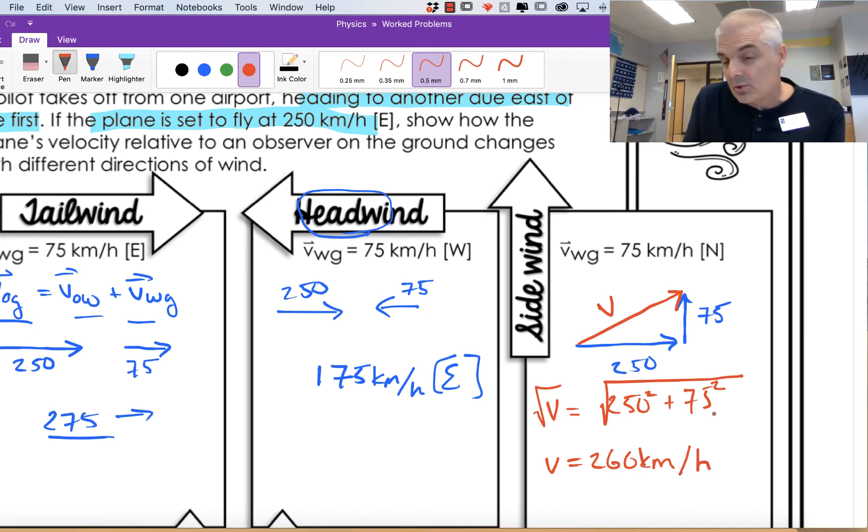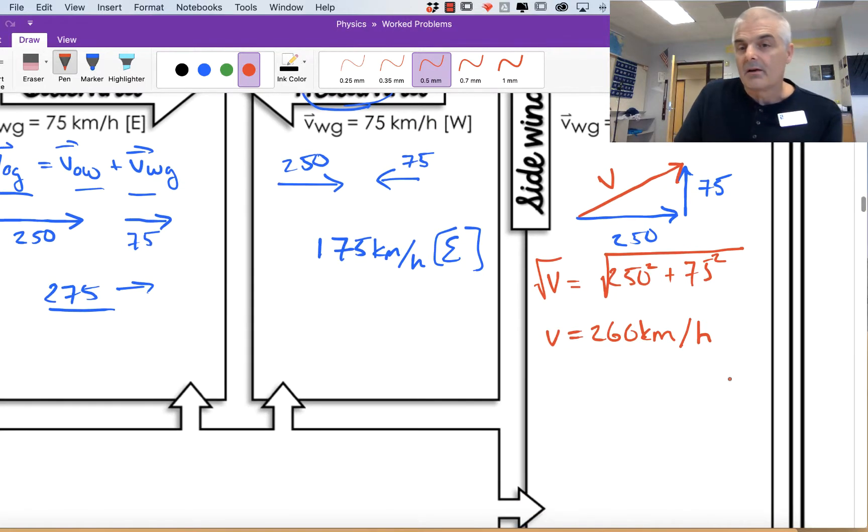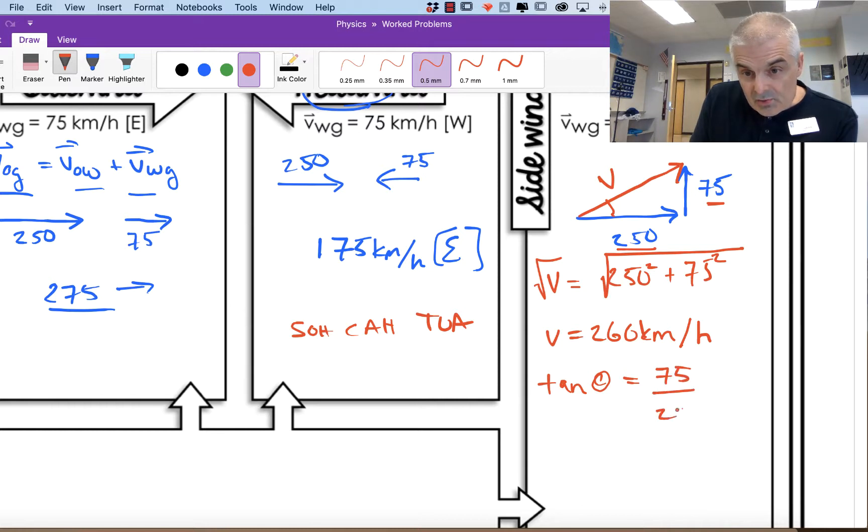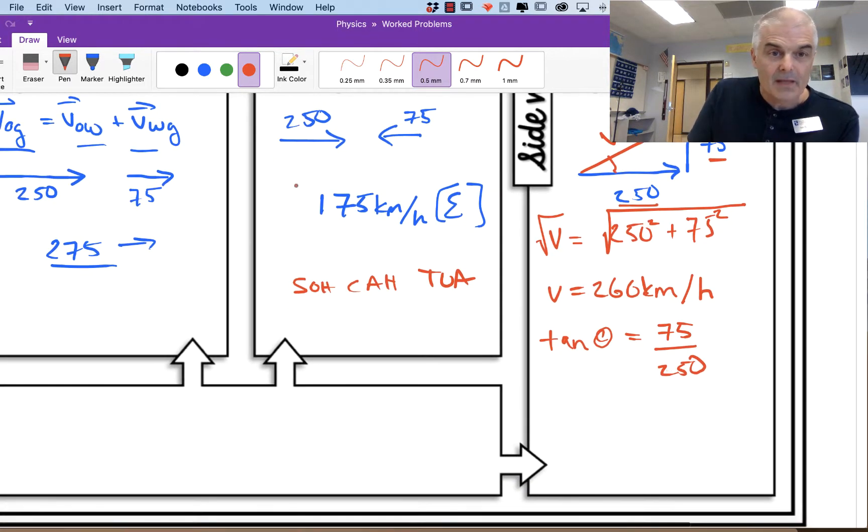Now that's 260 kilometers per hour off to some angle, but the angle matters. So if we're doing the angle, then we're going to do SOHCAHTOA. We've got the adjacent and this is the opposite, so opposite over adjacent, I'm going to use tan. So I can say tan of theta equals the opposite, 75, over the adjacent, 250. Now you have to do the arc tan, the inverse tan, get it on your calculator.